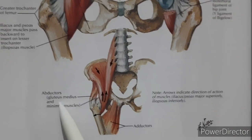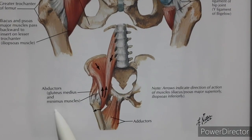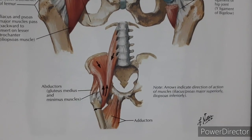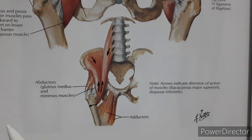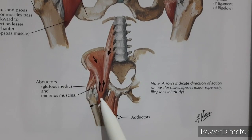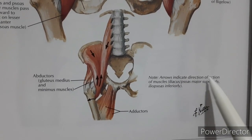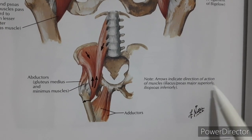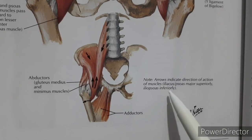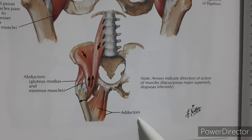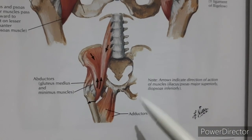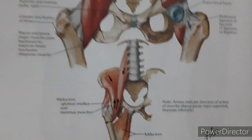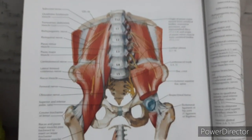The abductors are the gluteus medius and minimus muscles; when they are damaged, a positive Trendelenburg sign occurs. Note that arrows indicate the direction and actions of muscles: iliacus and psoas major act superiorly, iliopsoas acts inferiorly. The adductors shown are adductor longus, adductor magnus, and adductor brevis. So this is the diagram.